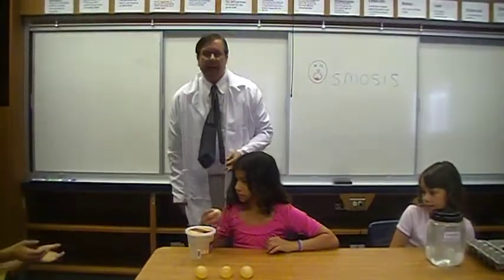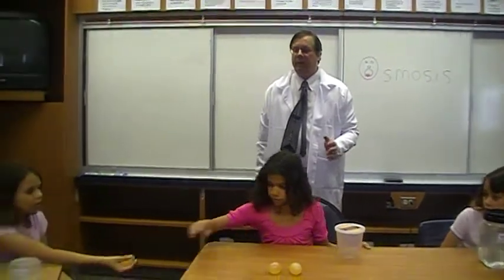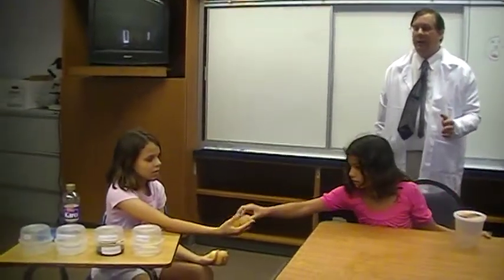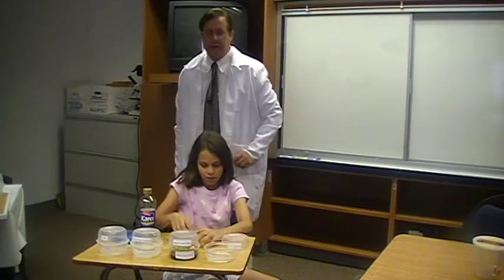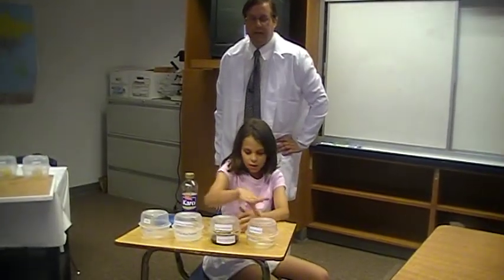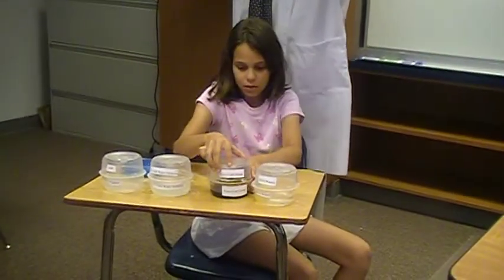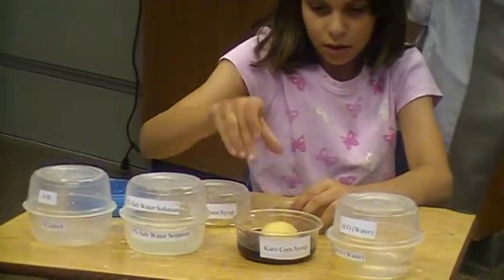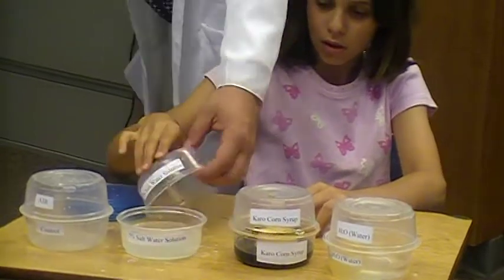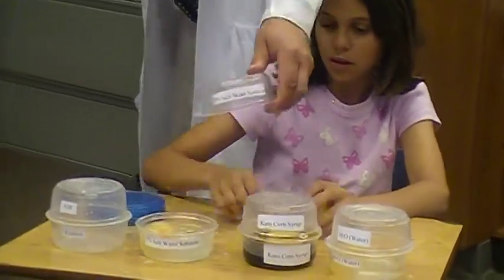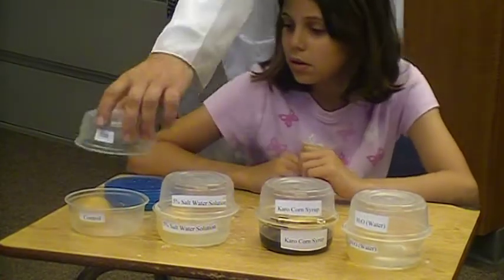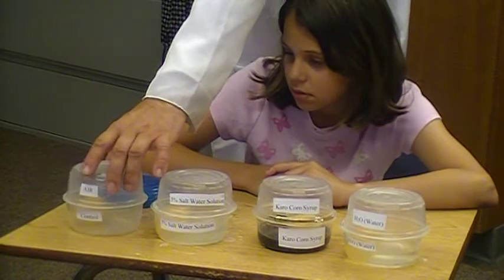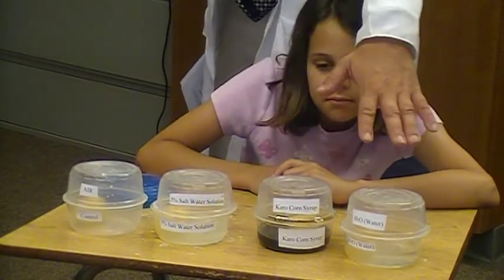Go ahead and hand your eggs to Julia. For the next step in this video lab on osmosis, we're going to take these four eggs and put them into four different jars containing four different solutions — or at least three different solutions; one of them isn't a solution. The first jar contains water, H₂O. Julia, can you put the first egg into that? The second container contains Karo corn syrup, which you can buy at any store. Julia, can you put the egg in that? The next container is a 5% salt solution. And the fourth container contains nothing but air — go ahead and put the egg in that. We're going to use this egg as our control group egg to measure how much these eggs are going to change or not change.